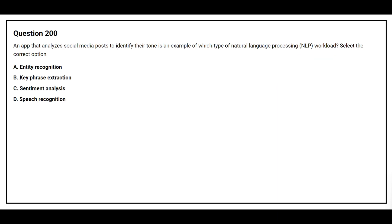Question number 200. An app that analyzes social media posts to identify their tone is an example of which type of natural language processing workload? Select the correct option. Option A: Entity recognition. Option B: Keyphrase extraction. Option C: Sentiment analysis. Option D: Speech recognition. The correct answer is Option C: Sentiment analysis.